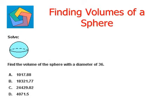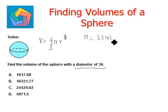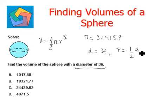Let's try the next question. Solve: find the volume of a sphere with a diameter of 36. Volume is given by the formula 4/3 π r³, where π = 3.14159. The diameter is 36, and radius is half of the diameter, so half of 36 gives us 18.